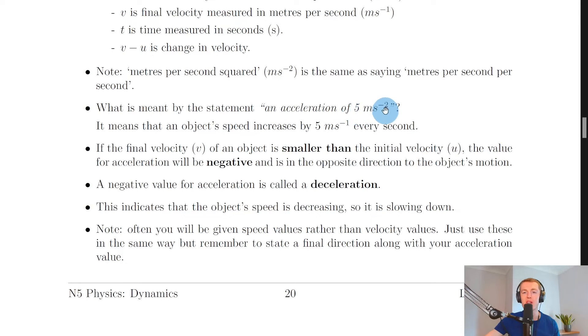So because it's a positive value of acceleration 5 meters per second squared, then we can say the object's speed increases by 5 meters per second every second. However, if the question asked what is meant by the statement an acceleration of minus 5 meters per second squared, for example, then you could say the object's speed decreases by 5 meters per second every second because the negative would imply a deceleration, a slowing down of the object.